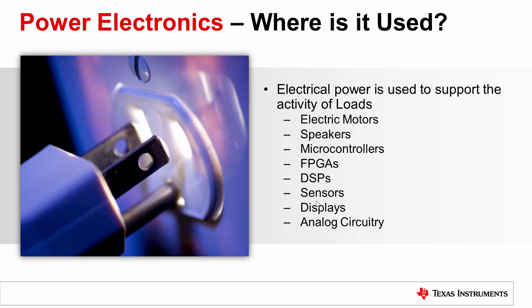DSPs perform signal processing, audio/video compression, speech compression, and a wide array of other processes. Microcontrollers, FPGAs, and DSPs alike are powered by low-voltage power supplies — in most cases 5 volts or below — and range from power levels of microwatts to hundreds of watts. Power is also used in displays to drive backlight LEDs in computers and televisions.